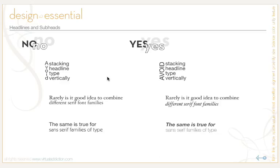You should never take a headline and stack the type vertically — it's very difficult to read. If you want to use vertical type, go ahead and rotate the text so it runs along its side. This is more pleasing and easier to read, and it also creates a stronger alignment and stronger overall design.